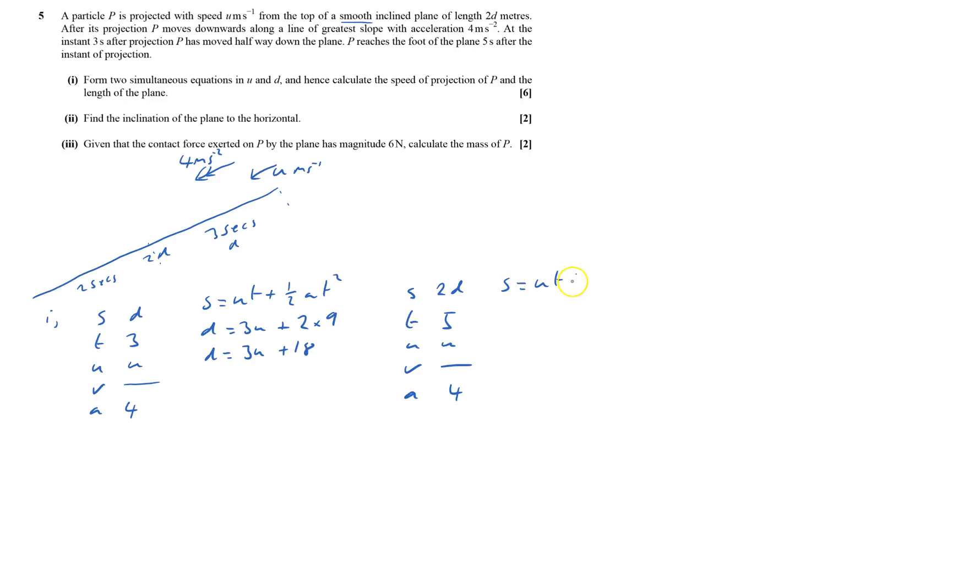So s is 2d equals u times 5, so that'll be 5u, plus half of a is still half of 4 is 2, times by 5 squared is 25, and that gives me 2d equals 5u plus 50.